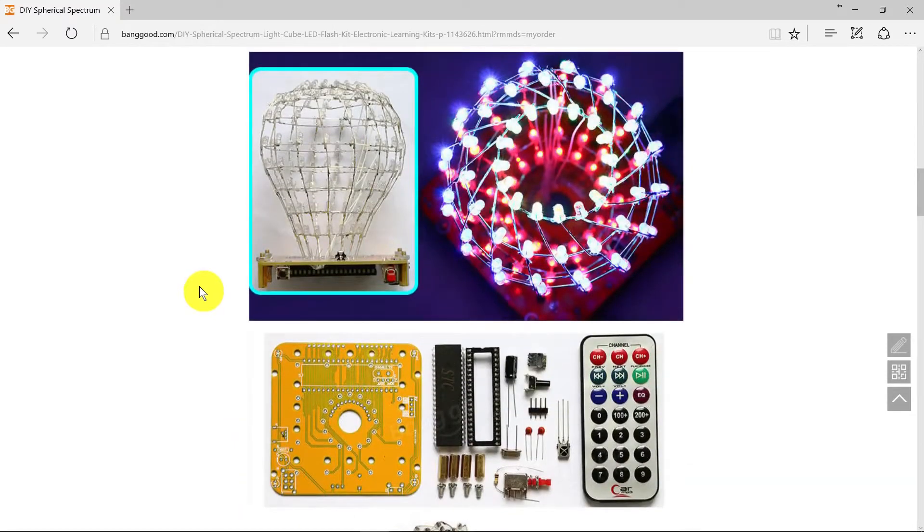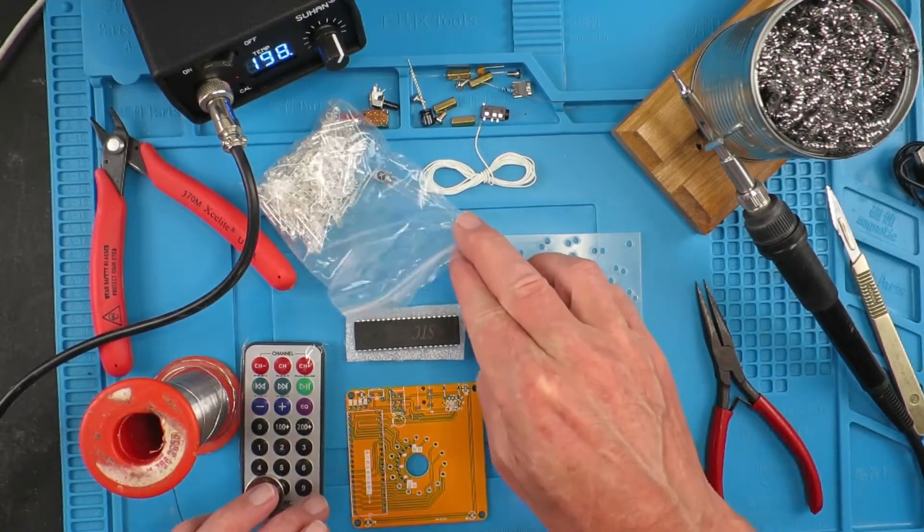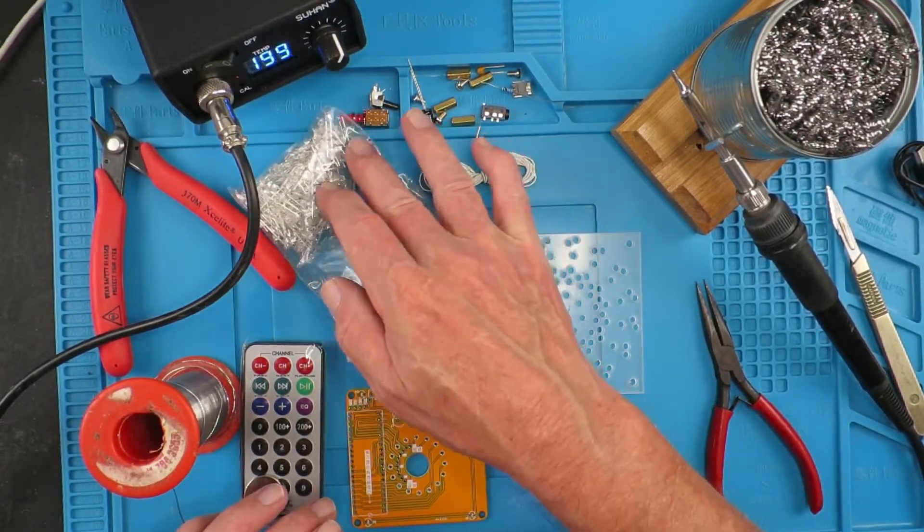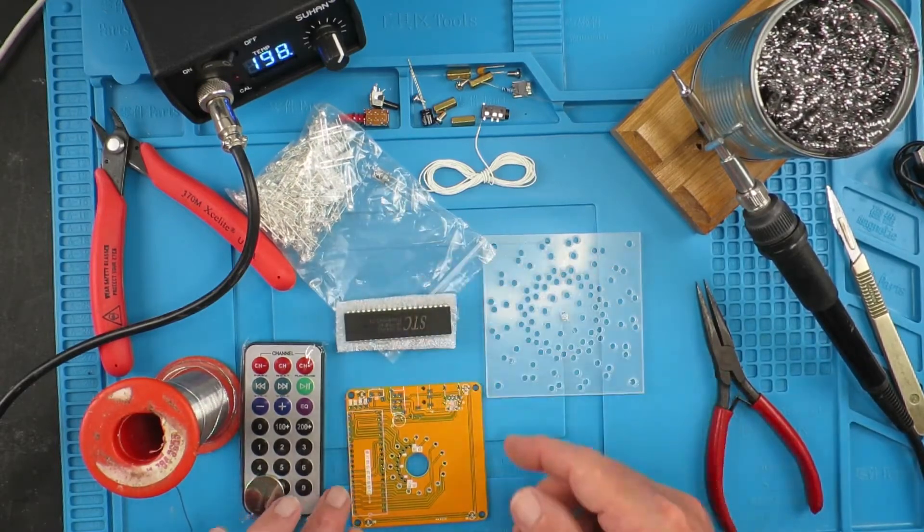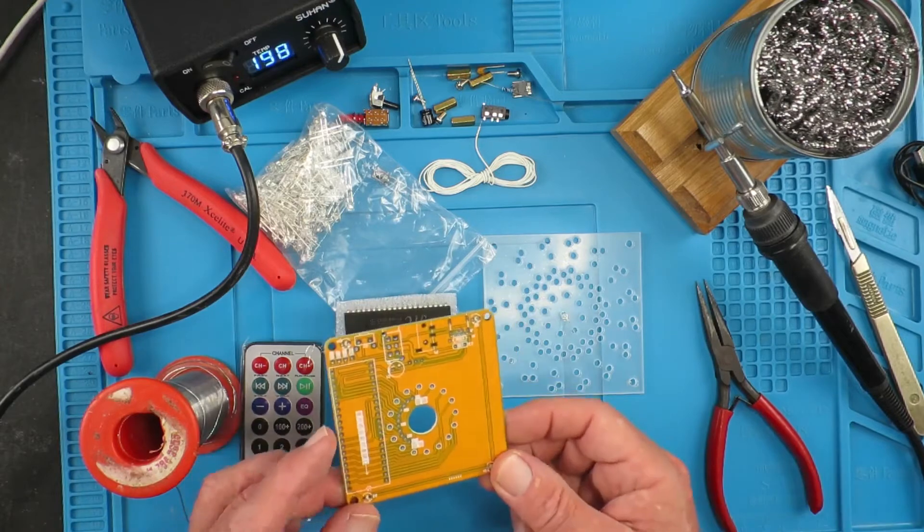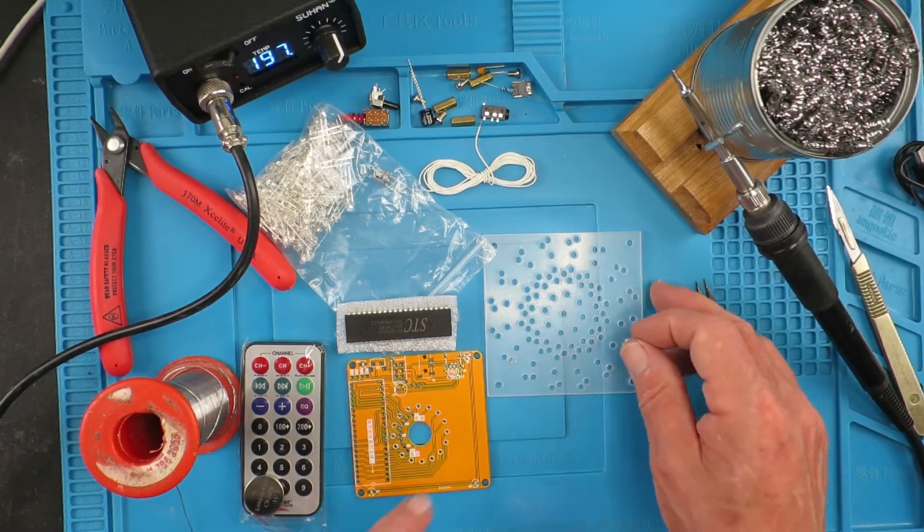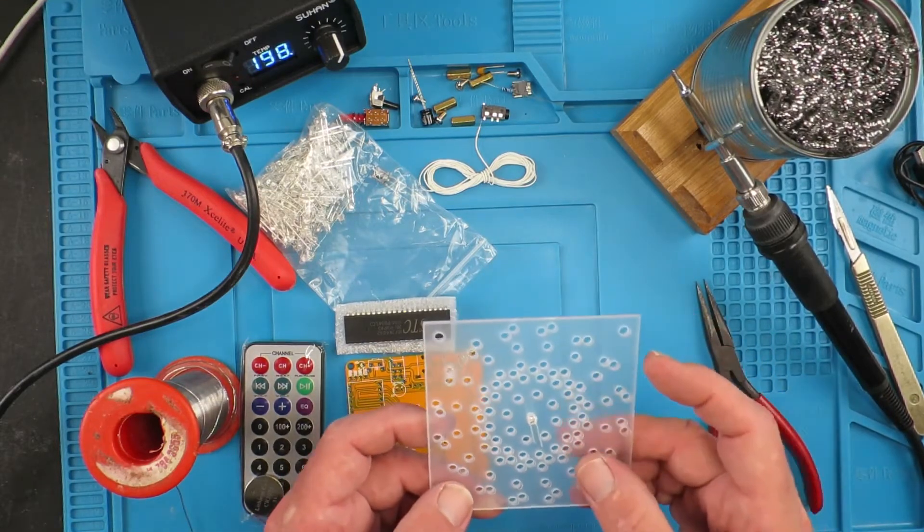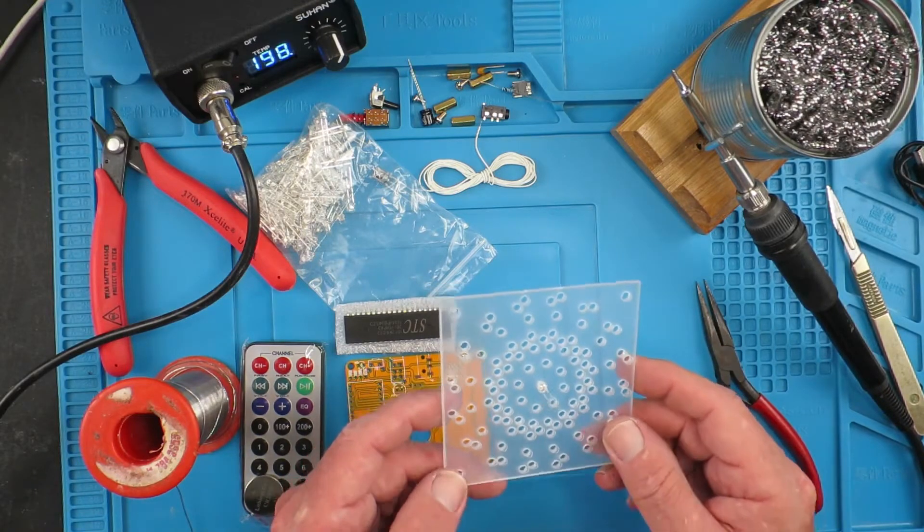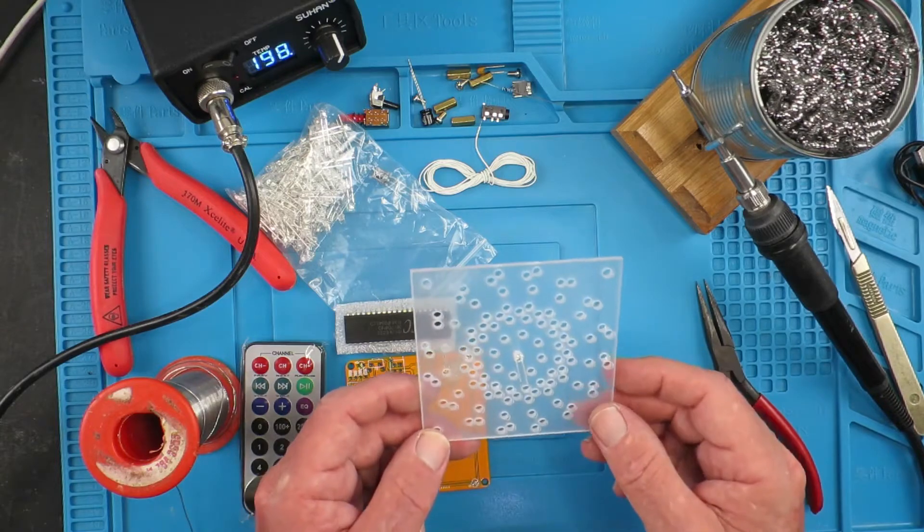Here we can see the kit contents. Apart from a mountain of LEDs, there's only a few components: main integrated circuit with its socket, nice little circuit board clearly marked out, and what appears to be some kind of jig for putting the LEDs in to help with the soldering.